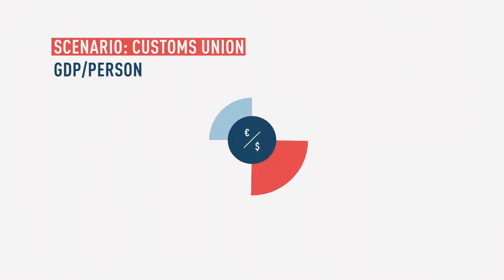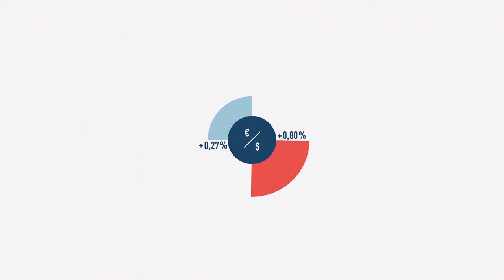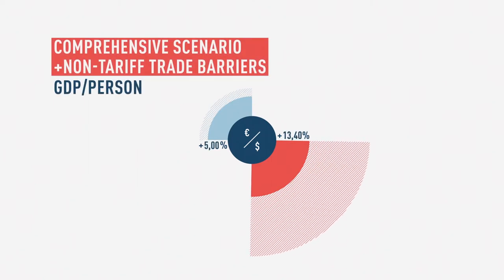In our last video, we showed that along with reduced tariffs, the abolishment or harmonization of standards and regulations, the so-called non-tariff trade barriers, would have enormous effects on growth and employment in the US and the EU.